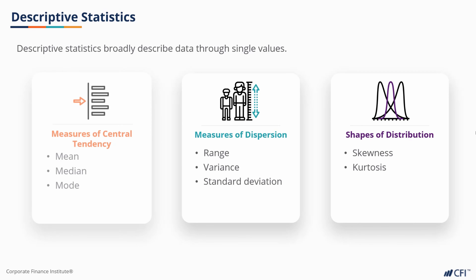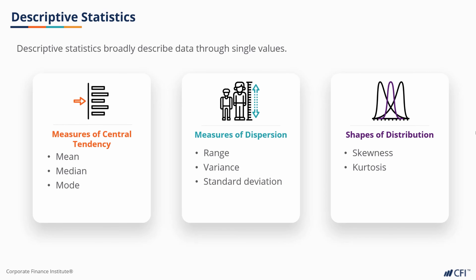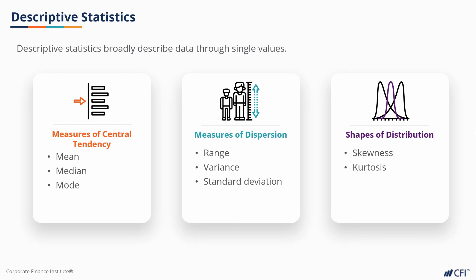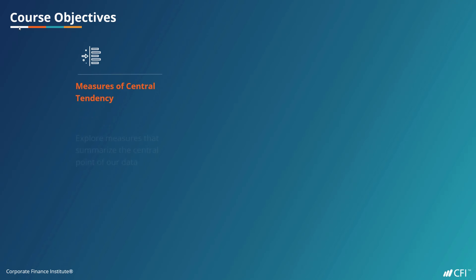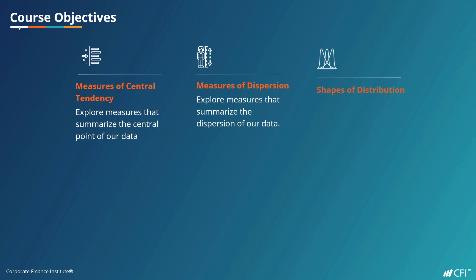For example, mean, median, and mode are all descriptive statistics that we refer to as measures of central tendency. There are some less commonly used descriptive stats that can offer us different insights, such as variance, standard deviations, skewness, and kurtosis. These can be categorized as either measures of dispersion or shapes of distribution. This chapter will explore these categories of descriptive statistics.